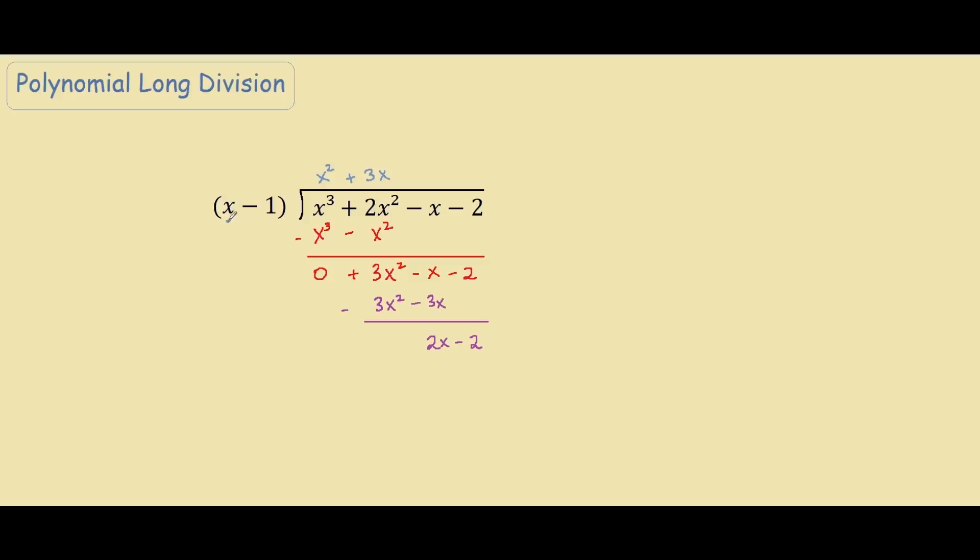So now we go back to our x again, and then divide 2x by x, we will get plus 2. And then we do 2 times x minus 1, we will get 2x minus 2. And as you can see, if we subtract this, we end up with 0.